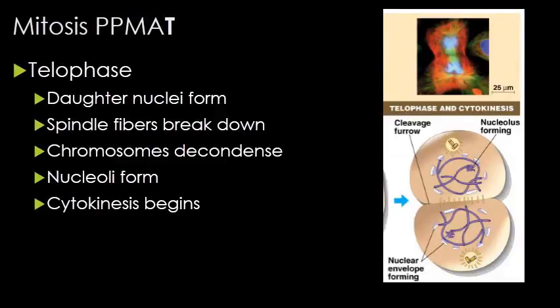Telophase is the last phase of mitosis, and you basically see the reverse of prophase. The spindle fibers break down and dissolve. The nuclear membrane starts to reform. The nucleolus starts to reform. The chromosomes stretch back out into chromatin. And you begin to see a trough or furrow forming — that is the beginning of cytokinesis.